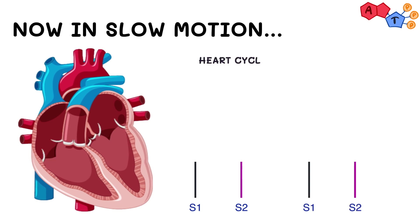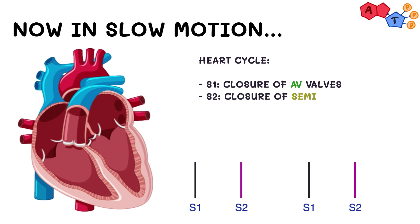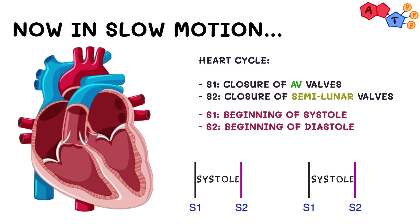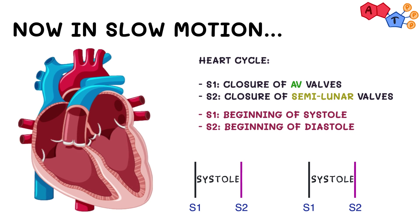This is S1 and this is S2. The area between S1 and S2 is systole — in other words, when the AV valves close and pulmonic and aortic valves are open, it is systole, where blood is being pumped out of the ventricles. Diastole, on the other hand, is defined by the relaxation of the ventricles. It happens between S2 and S1, when the AV valves are open and aortic and pulmonic valves are closed.